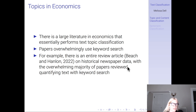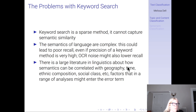For example, there's an entire review article on historical newspaper data where the overwhelming majority of papers reviewed quantify text with keyword searches. What are the potential problems with keyword search? Well, centrally, keyword search is a sparse method — it cannot capture semantic similarity by definition.